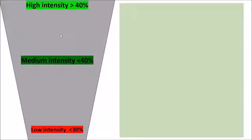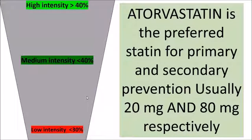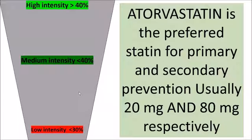Statins are classified as high-intensity (reducing LDL cholesterol by more than 40%), medium-intensity (30–40% reduction), and low-intensity (less than 30%, basically 21–30% reduction). In the UK, atorvastatin is the preferred statin for both primary and secondary prevention, as clinical trials show high efficacy and fewer side effects than simvastatin. For primary prevention the dose is usually 20mg, and for secondary prevention it is usually 80mg unless comorbidities require dose reduction.